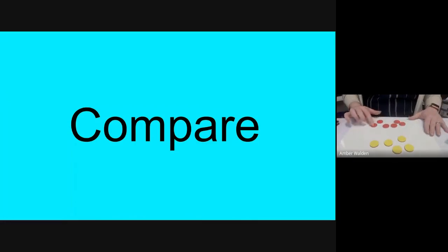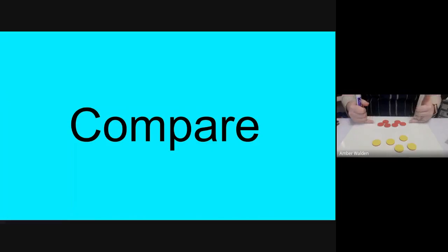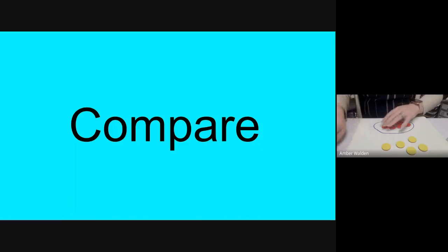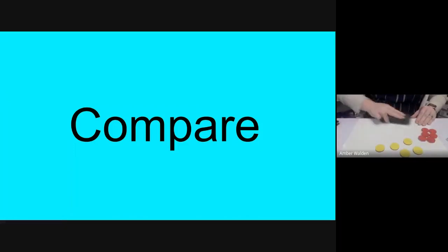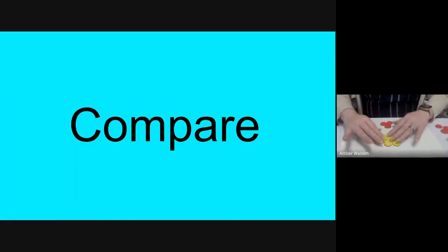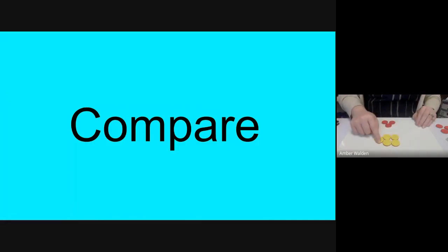But if I take one yellow away, now I have six red and five yellow. Which group has the most? This one has six and this one has five — that's right, this group has more, so I'm going to circle it. Let's do another example: if I had two red and five yellow, which group has more? Yellow — because yellow has five and red only has two, so I would circle the yellow group because it has more.